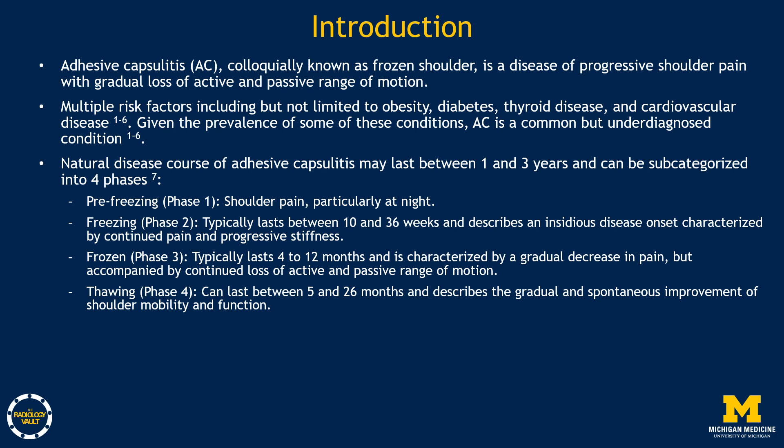The third phase, or what is known as frozen, typically lasts between four to 12 months and is characterized by a gradual decrease in pain, but accompanied by continued loss of active and passive range of motion. The final phase, which is thawing or phase four, can last anywhere between five and 26 months and describes the gradual and spontaneous improvement of shoulder mobility and function.